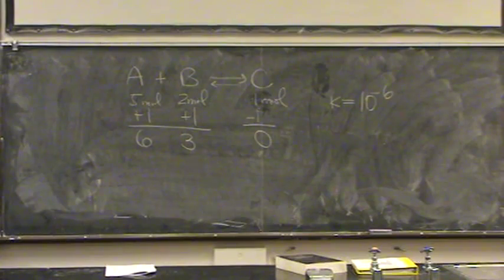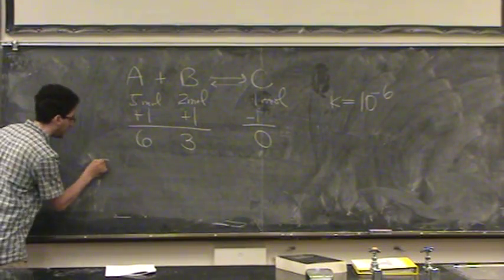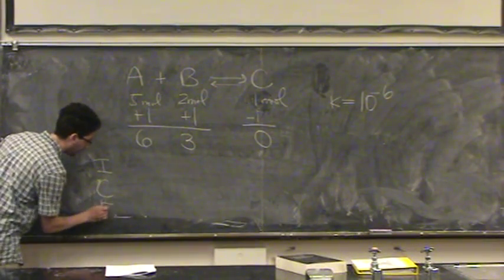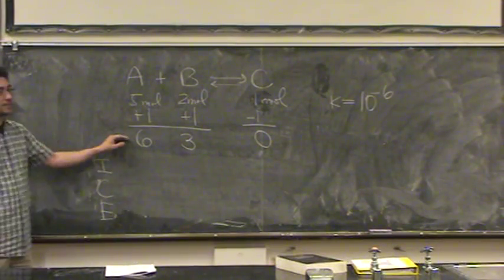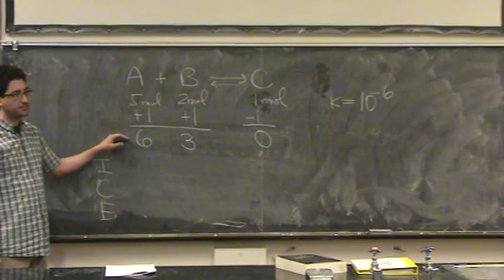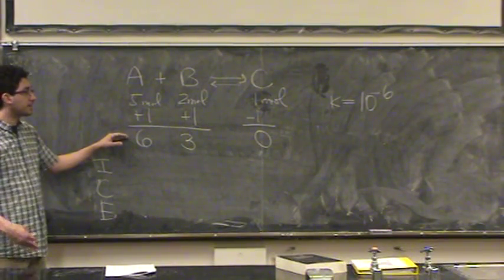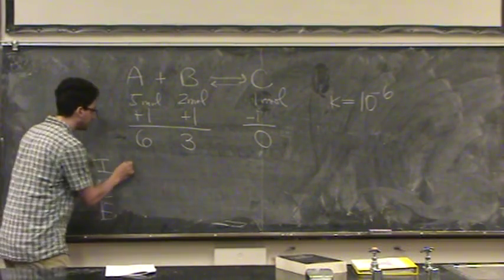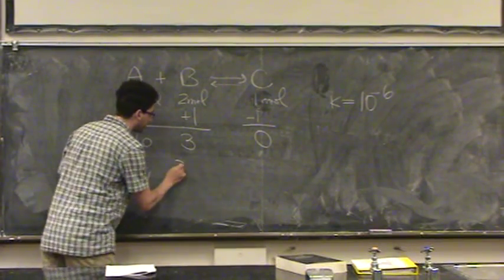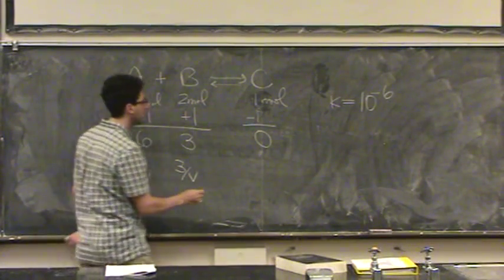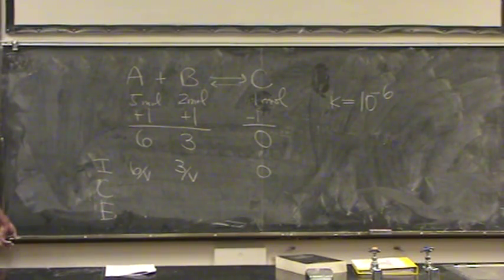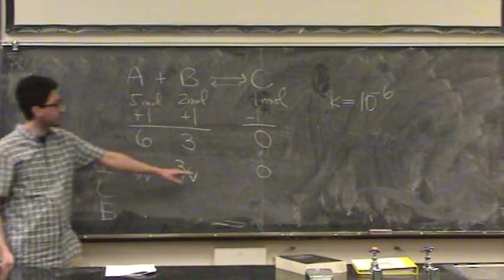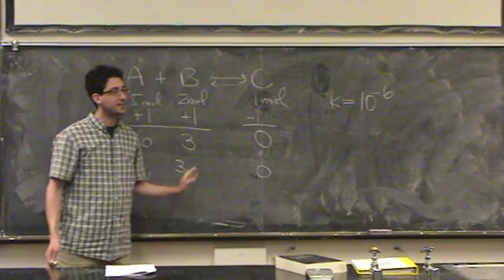Now, if I wanted to, I could go into the ice table. I, C, and E. The I line is these numbers change to molarity. Again, you can use moles, but I encourage molarity. So it would be 6 divided by the volume, 3 divided by the total volume, and 0. Now, which way is this going to shift? It's going to shift to the right. It's got to go towards the 0. It can't shift away from it, because there's nothing for it to make.